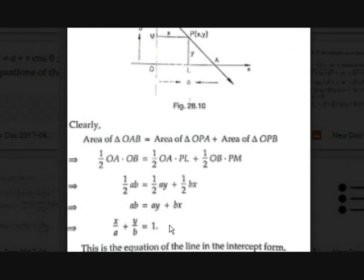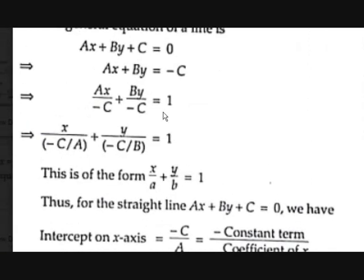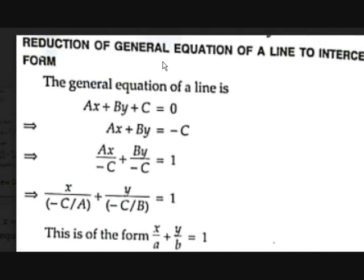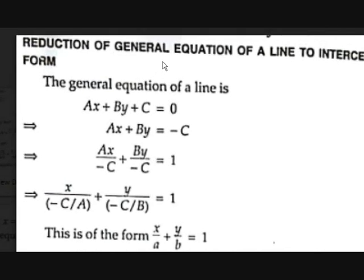We have proved the intercept form. Now let's see how to reduce the general equation of a straight line to the intercept form. We know the general equation Ax + By + C = 0. Let us use capital letters A, B, and C to avoid confusion with the intercepts a and b.